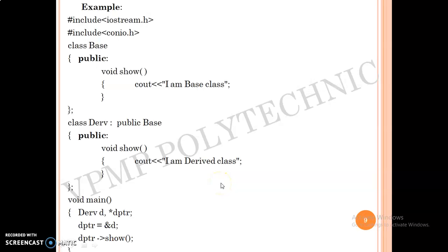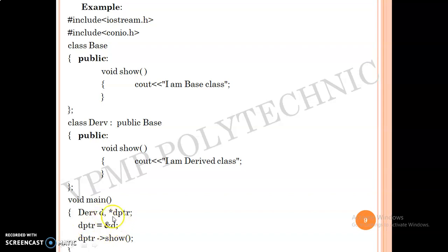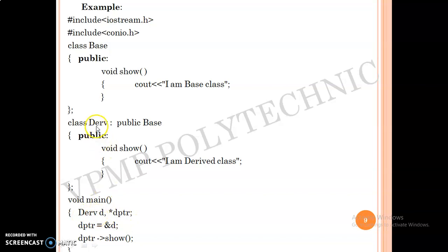Now about pointer to derived class. In this example we have created a pointer dptr — this is the derived pointer. We have created a pointer of the derived class. This pointer stores the address of object d. Whatever the address of d is transferred to this pointer variable, and then you can call the function using pointer to objects. The pointer to object here calls the function show, and it stores the address of the object from the derived class.